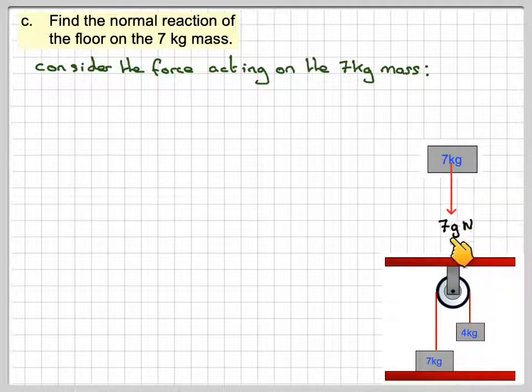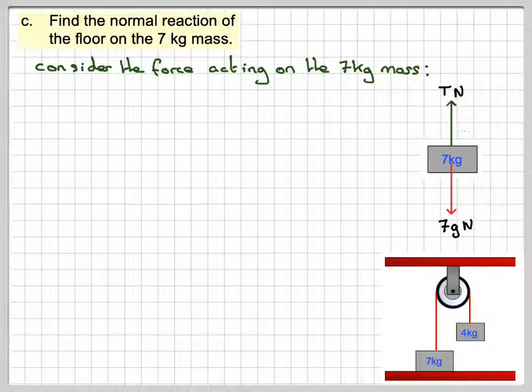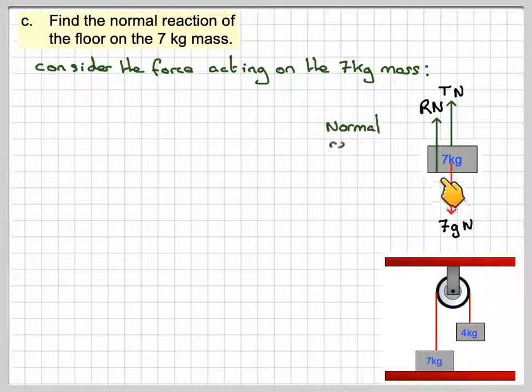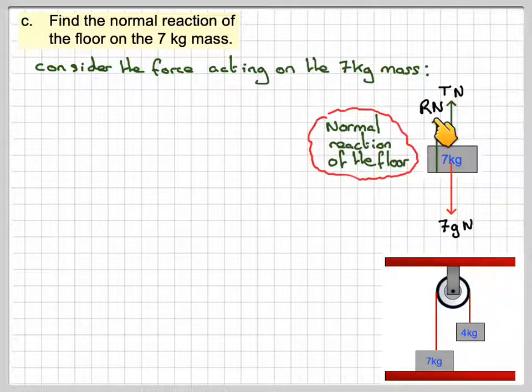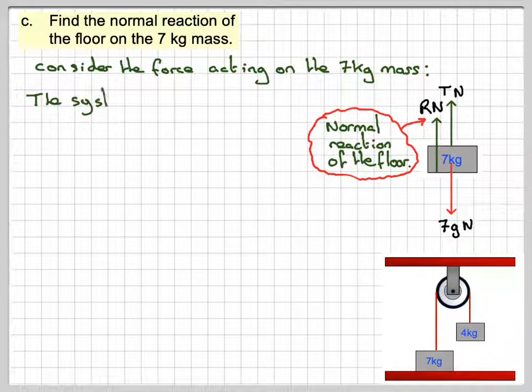So we've got the weight of the 7kg mass, which is 7g newtons. And then we've got the tension, and then we've got the reaction of the floor with the block, which we're going to call R newtons. Right, the system again is in equilibrium.